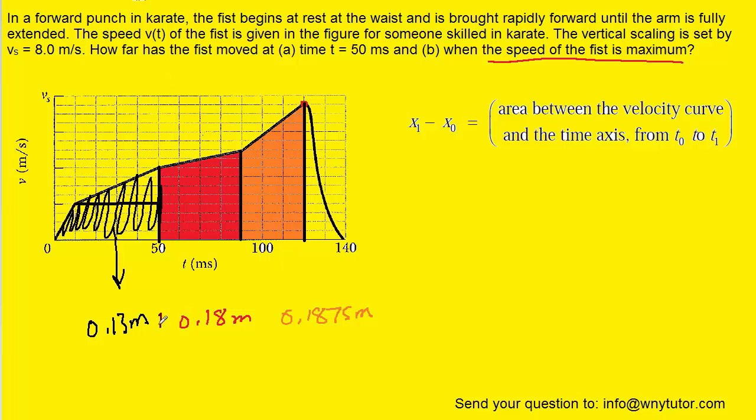And so we'll now simply add these three regions up. And when we do that, we get about 0.50 meters. And so this is how far the fist has traveled when it reaches its maximum speed.